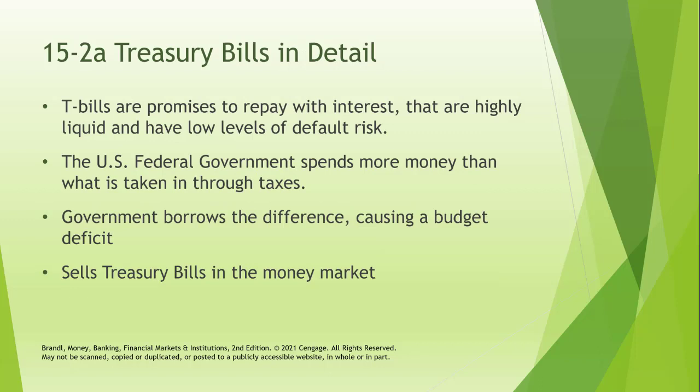A Treasury bill is a promise to repay with interest, making it highly liquid with low default risk. For example, if on the maturity date the face value of the T-bill is a million dollars, you'll buy it in the T-bill market for less than a million. If you buy it for $999,000, you earn interest of $1,000, because you get a million back at the end.